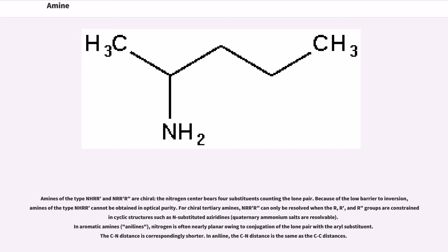In aromatic amines, anilines, nitrogen is often nearly planar owing to conjugation of the lone pair with the aryl substituent. The CN distance is correspondingly shorter. In aniline, the CN distance is the same as the CC distances.